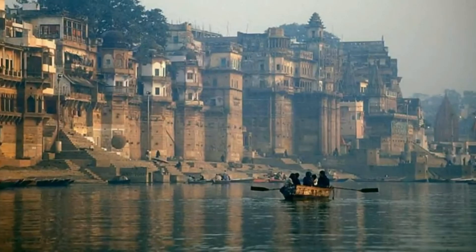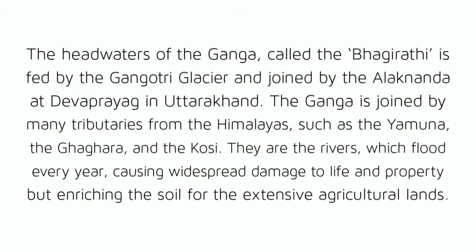The Ganga River System: The headwaters of the Ganga, called the Bhagirathi, is fed by the Gangotri glacier and joined by the Alaknanda at Devprayag in Uttarakhand. The Ganga is joined by many tributaries from the Himalayas, such as the Yamuna, the Ghaghara and the Kosi. These rivers flood every year, causing widespread damage to life and property but enriching the soil for the extensive agricultural lands.